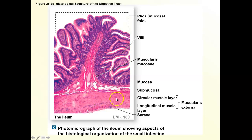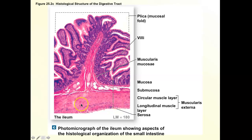For the muscularis externa, you should be able to tell the two layers apart — the cell patterns are different. You have an inner circular muscle and an outer longitudinal muscle. There's a saying: 'your inner circle of friends' — the circular layer is inner, the longitudinal is outer. You should see the very different patterning between these two layers. The last layer is serosa, which is just one simple squamous cell layer — very thin and nearly invisible at this zoom level.